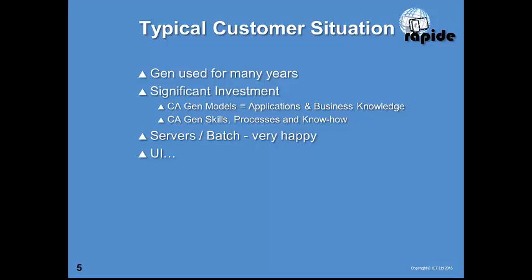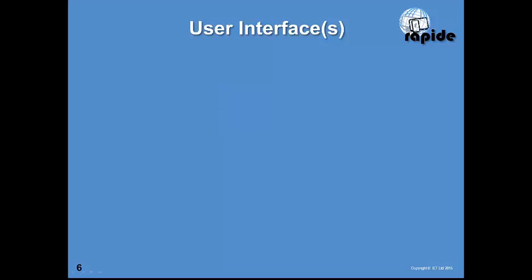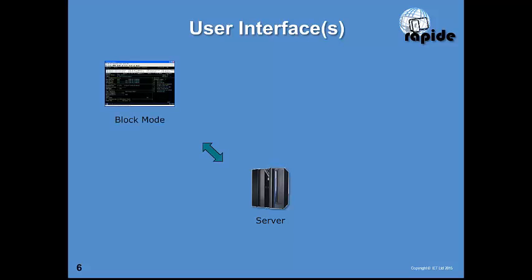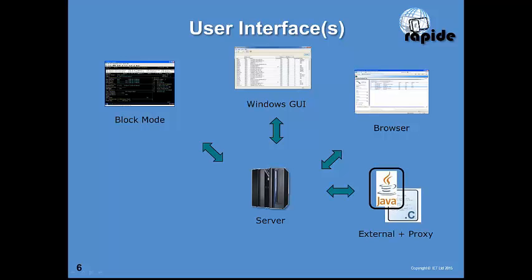For the server and batch side, everyone would agree Gen is incredibly strong — the systems built with Gen are very stable and easy to maintain. For the UI it's a bit more challenging. The typical user interfaces you can build with CA Gen include block mode, Windows GUI, and browser, accessing servers on the mainframe, Unix, or Windows. You can also use proxies and write clients outside of Gen in any technology like Java or .NET. For mobile, Gen is currently lacking — there is no mobile capability.